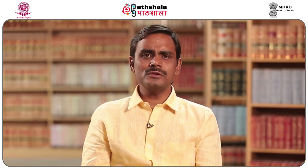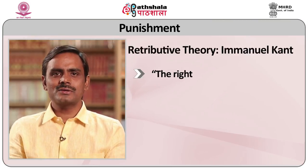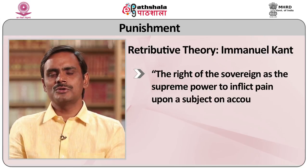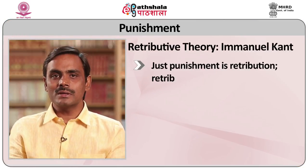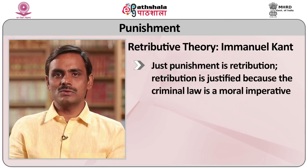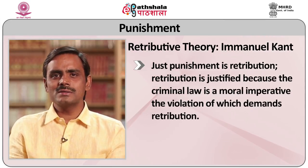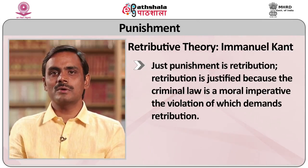We will now see in detail what Immanuel Kant says about punishment and retribution. Kant described the right to impose criminal punishment as the right of the sovereign as the supreme power to inflict pain upon a subject on account of a crime committed by him. Kant, who believed penal law to be a categorical imperative, said that punishment must in all cases be imposed only because the individual on whom it is inflicted has committed a crime. According to Kant, just punishment is retribution, justified because the criminal law is a moral imperative, the violation of which demands retribution.